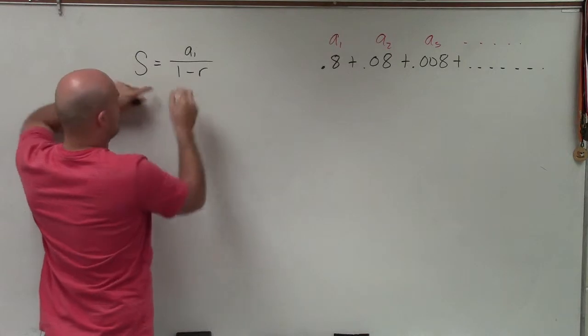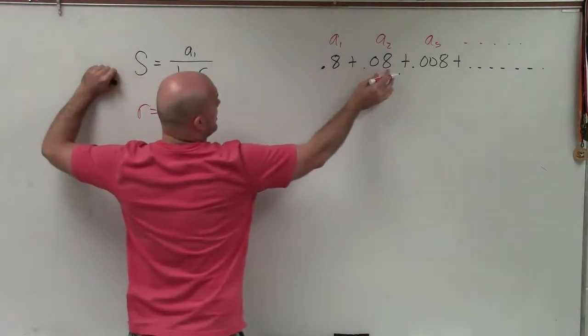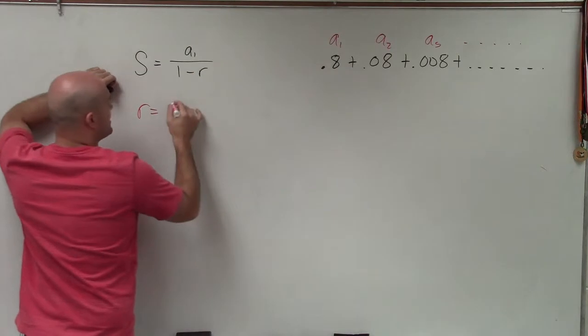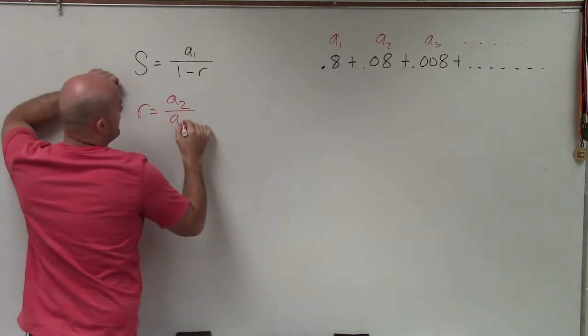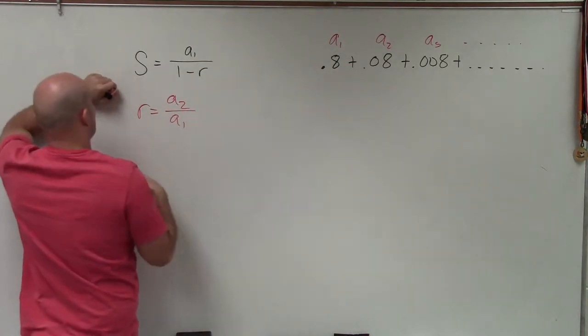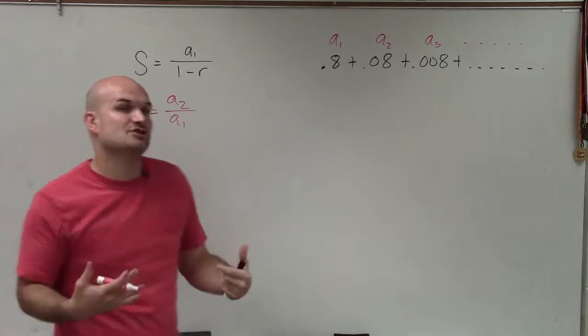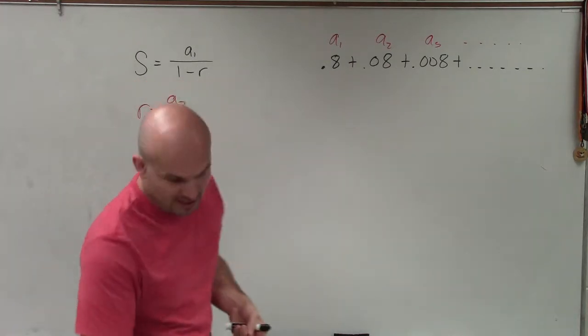Then we need to know what r is. Now remember, r is pretty much just the ratio between your term and its previous term. So I do a₂ divided by a₁. You could also do a₃ divided by a₂. But since it's a geometric sequence, we know that ratio is going to be the same.